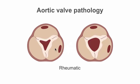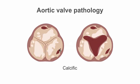In rheumatic heart disease, the aortic valve may become calcified, particularly at the base of the commissures, and this can result in aortic stenosis or aortic regurgitation. In calcific degenerative aortic stenosis, we often see diffuse calcification of the valve leaflets, and this causes a reduction in leaflet opening during systole, leading to aortic stenosis.